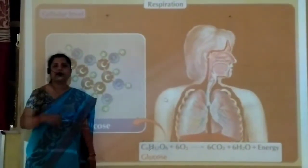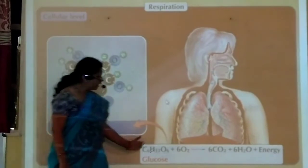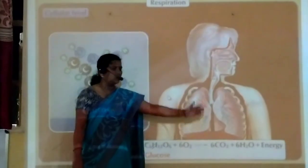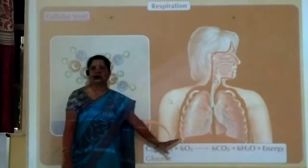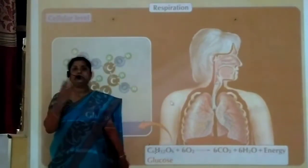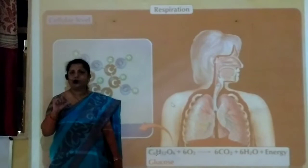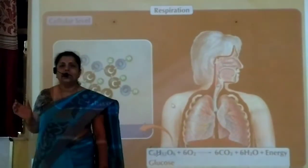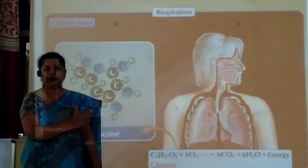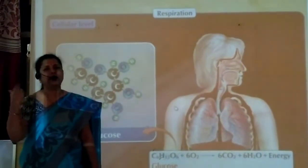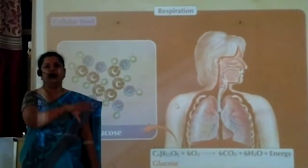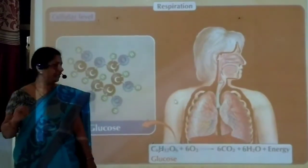The equation is: C6H12O6 + 6O2 → 6CO2 + H2O + energy. But this is not a simple process. This total oxidation process is carried out in 3 steps. Respiration is not similar in all living organisms. Respiration is of two types: aerobic respiration and anaerobic respiration.